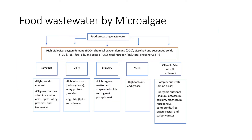So why do we implement food wastewater? Food processing wastewater contains high biological oxygen demand and chemical oxygen demand, dissolved suspended solids, fats, oil, grease, nitrogen, and phosphorus. In addition to low concentrations of toxic pollutants, this indicates that there is a higher chance for microalgae cultivation to remove nutrients from food wastewater, such as from soybean, dairy, brewery, meat, and oil meal sources. In the meantime, it can produce value-added by-products such as protein, polysaccharides, and lipids, which are suitable for the production of bioplastics.